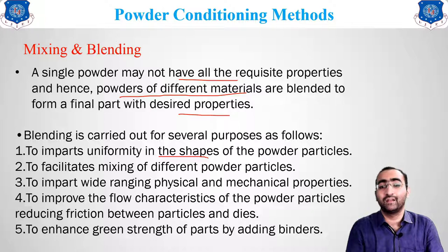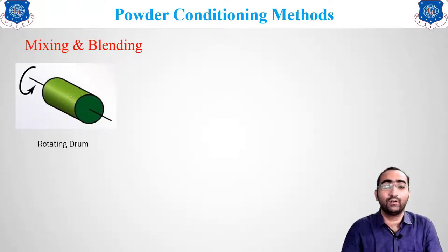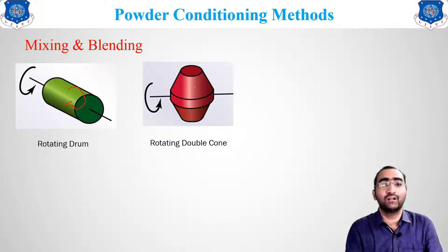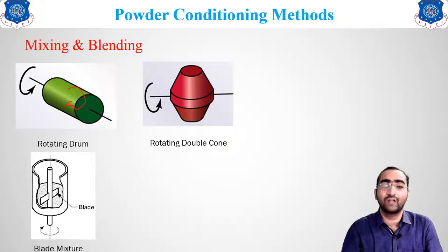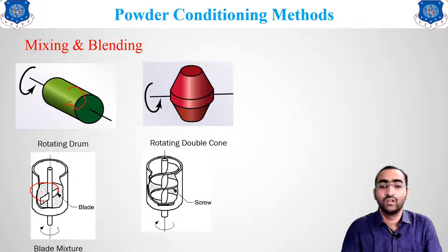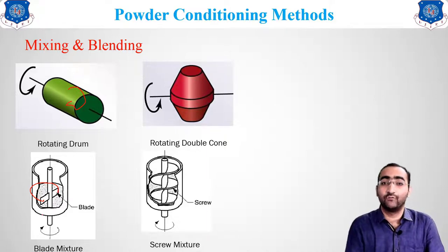Another reason for blending is to increase green strength — by adding binder, the material can resist its shape and will not break down. Equipment used for mixing and blending includes: the rotary drum, where the drum rotates to mix everything; the rotating double cone, similar to a cement mixer; a blade-type mixer where blades rotate to achieve mixing; and the most efficient type — the screw mixer, where the screw moves to ensure proper mixing of the material.